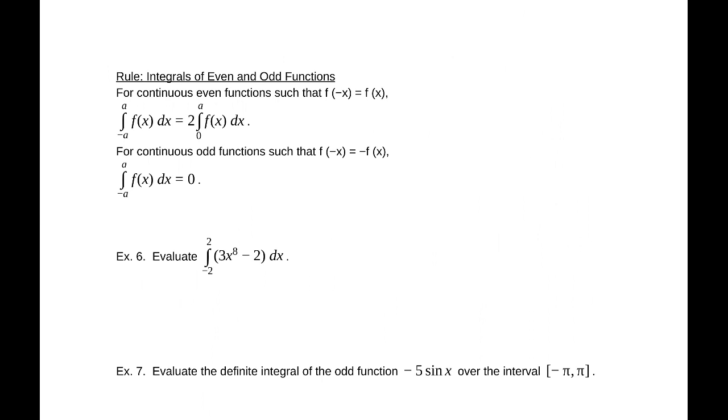Next example, even and odd functions. For an even function, for any even function, the integral from negative a to a is the same as twice the integral from 0 to a of that function. For odd functions, if our end points are opposites here, negative a to a, that integral is going to be 0. The reason being, let me just draw an even function. It would be symmetric about the y axis. So rather than finding both of these areas, why not just find 1 and double it?